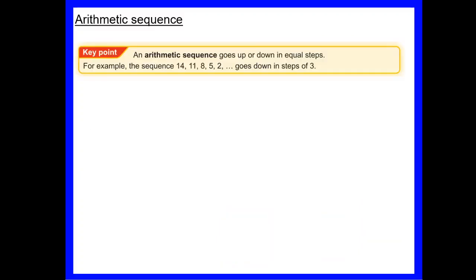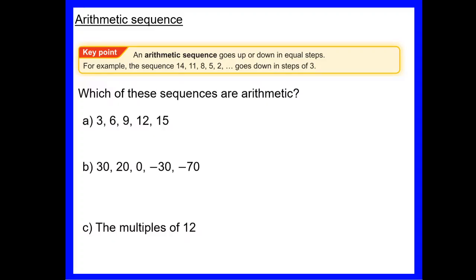We're going to start by looking at arithmetic sequences. An arithmetic sequence goes up or down in equal steps. In the example 14, 11, 8, 5, 2, it's arithmetic because it goes down in steps of three. It's found by either adding or subtracting from one term to the next.